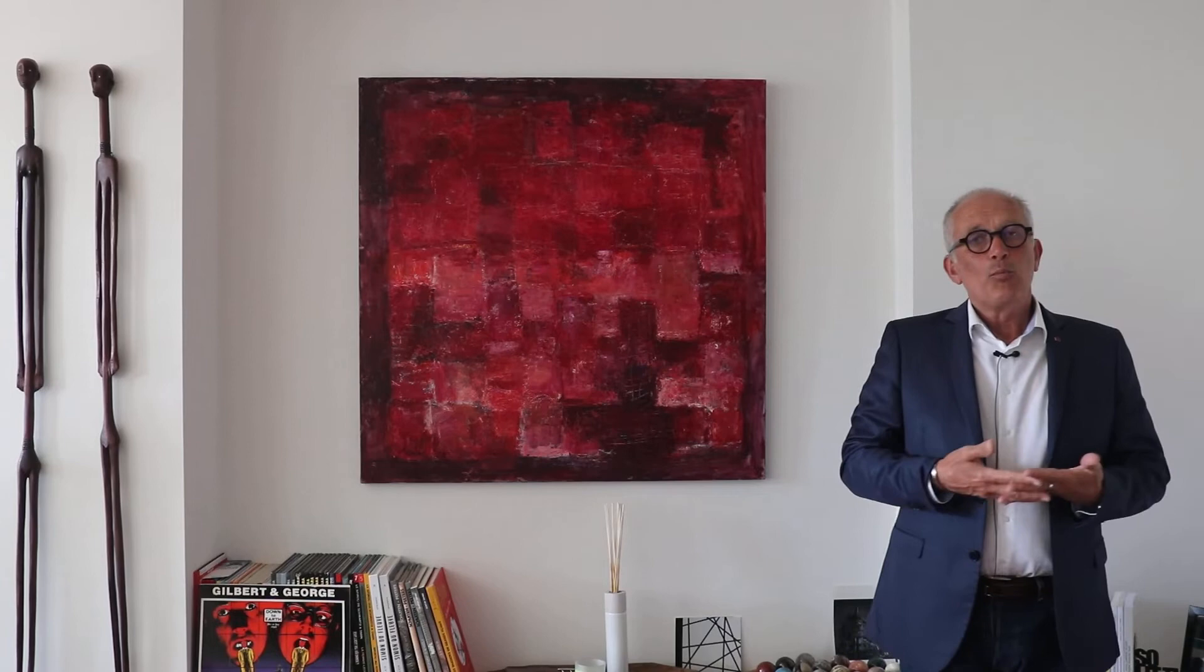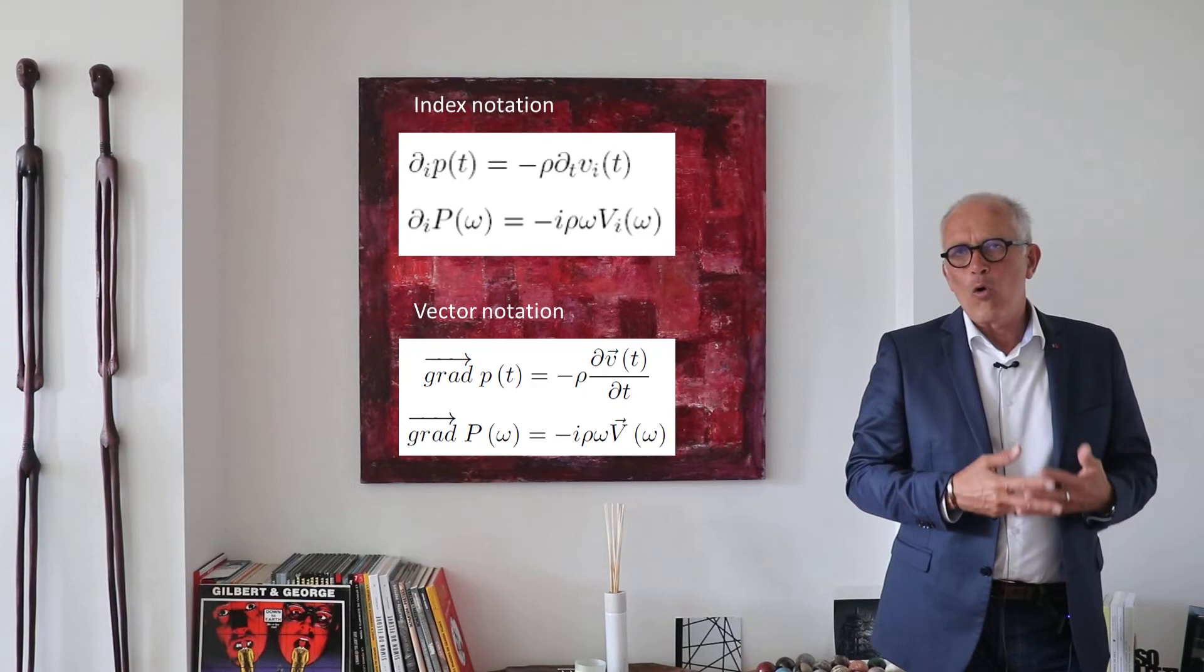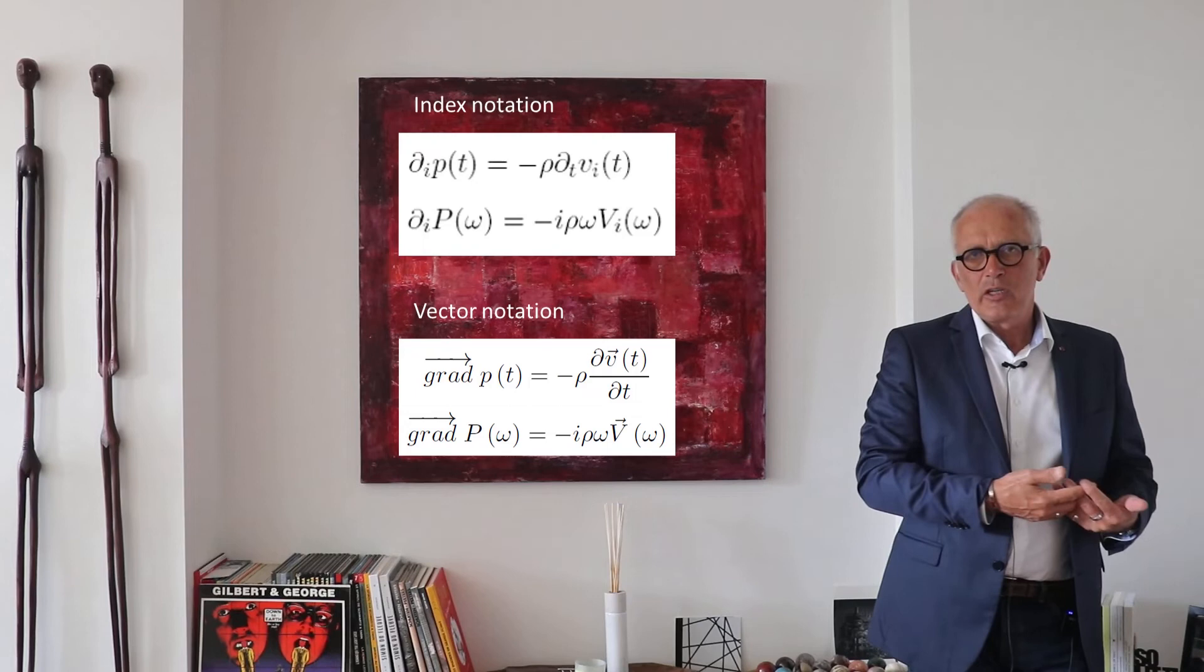We have transformed the wave equation into the Helmholtz equation, but we can also transform Euler's equation, this equation that we haven't used so far which relates the pressure gradient to the time derivative of the velocity. Again, we simply apply the Fourier transform to that equation and obtain an equation that we are going to use over and over in the course that directly relates the velocity to the pressure gradient.